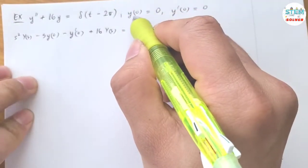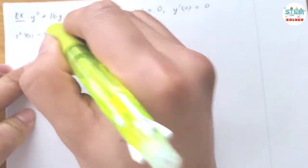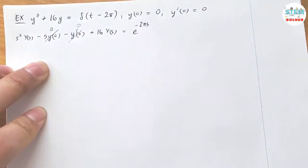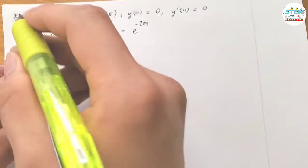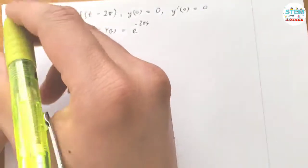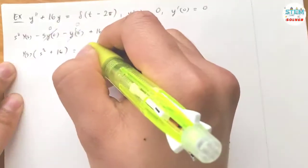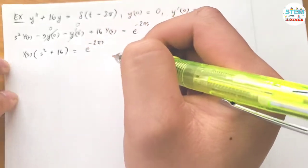Now take a look at the conditions, y of 0 equals 0, so this becomes 0, y prime of 0 equals 0, so this becomes 0. So factor out capital Y of s, I have s squared plus 16 equals e to the negative 2π s, now divide both sides by s squared plus 16.